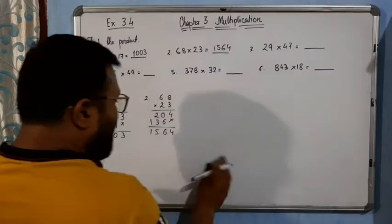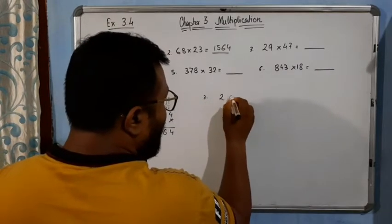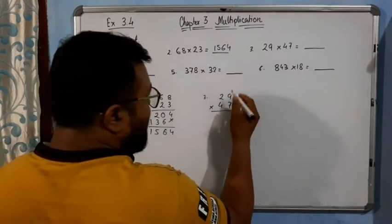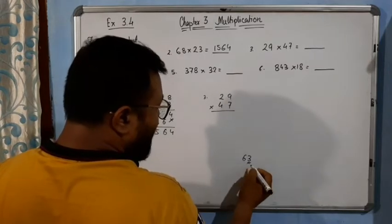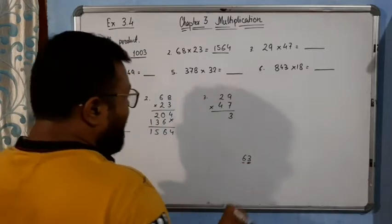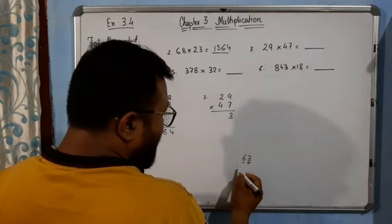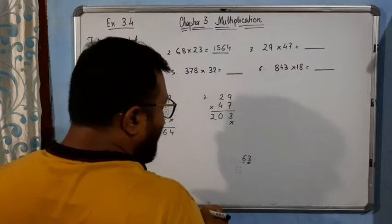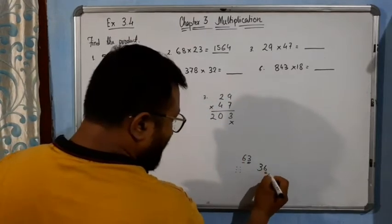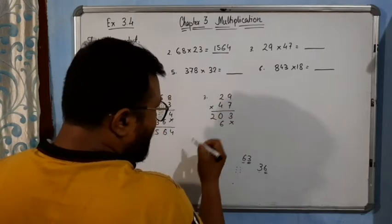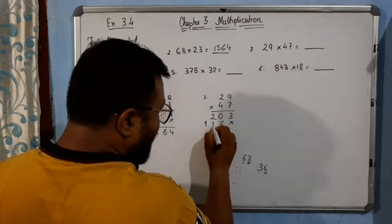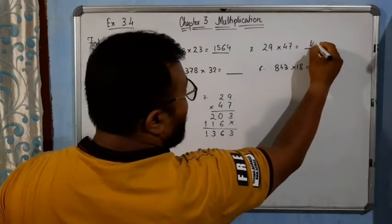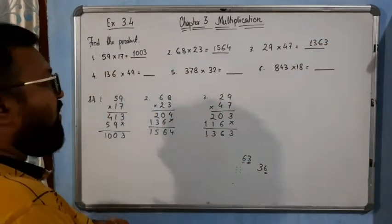Now come to the third one. Here 29 is multiplied by 47. 7 times 9 is 63, so we take 3 and 6 is carried over. Then 7 times 2 is 14, plus 6 is 20. Cross: 4 times 9 is 36, write 6 here, 3 carry over. Then 4 times 2 is 8, plus 3 is 11. So we will write 1363. This is the answer.